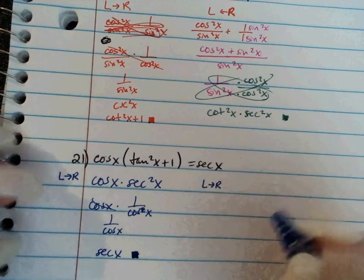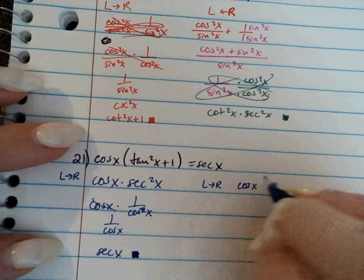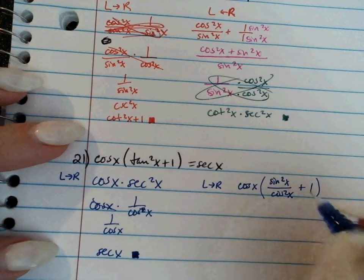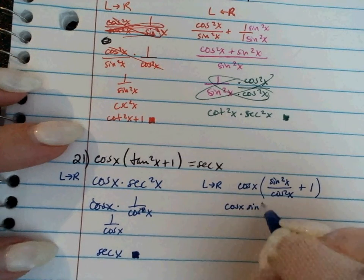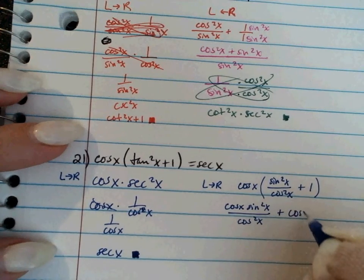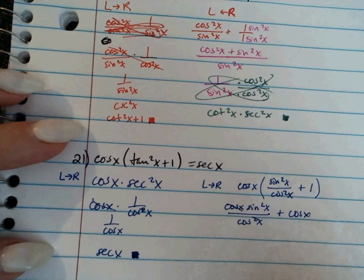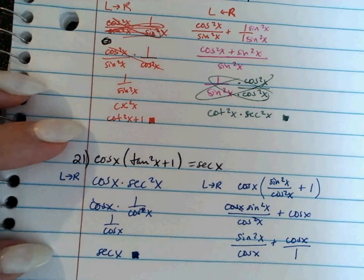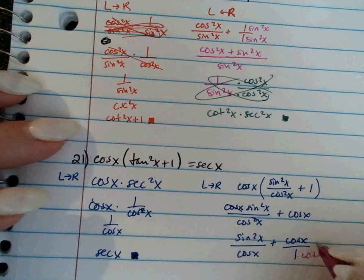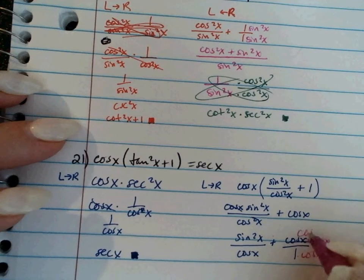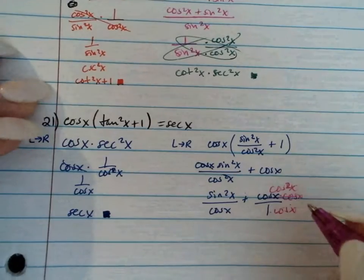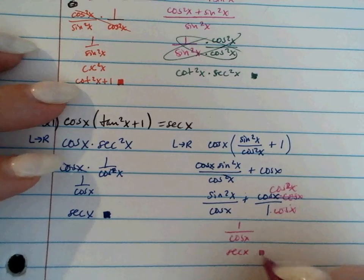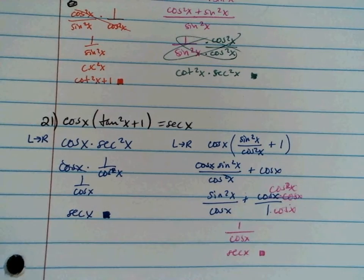Another option going left to right: replace tangent squared with sine squared over cosine squared. So I have cosine times the quantity sine squared over cosine squared plus 1. Distributing the cosine gives cosine times sine squared over cosine squared, plus cosine. Canceling a cosine leaves sine squared over cosine, plus cosine over 1. Finding a common denominator of cosine, the numerator becomes sine squared plus cosine squared, which equals 1 over cosine — which is secant. Either way works.